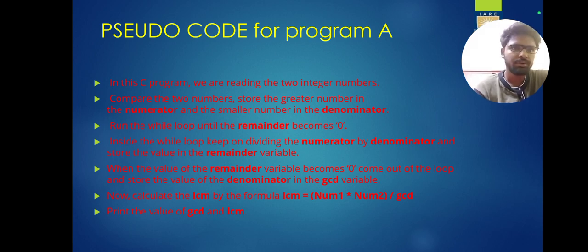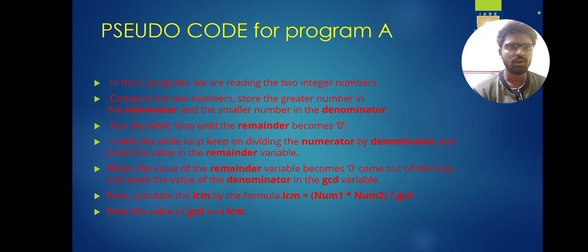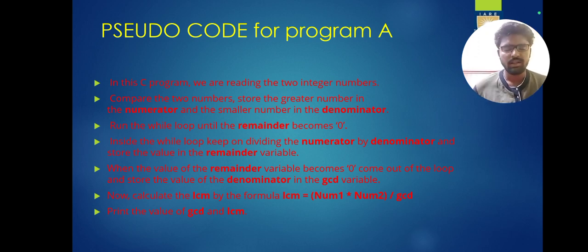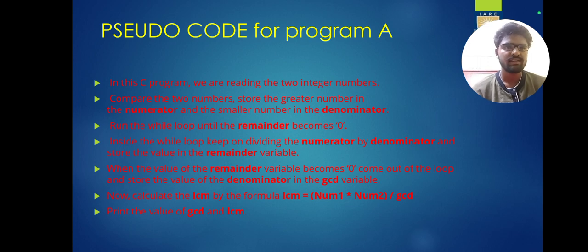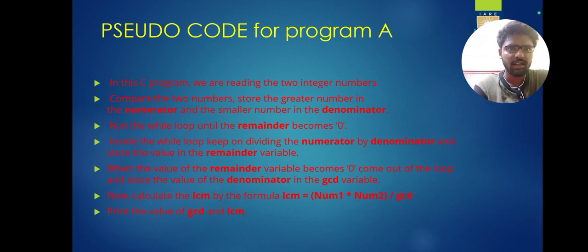Compare the two numbers: store the greatest number in the numerator and the smallest number in the denominator. Basically while calculating GCF I need to know what is the remainder, what is the numerator, and what is the denominator. It should be in a proper fraction. I will take the greatest number on the numerator side and the smallest on the denominator side. Here I am using a while loop, but you can also use a for loop — while will be a better option for finding GCF.